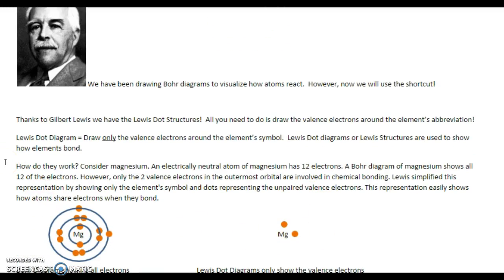How do they work? Consider magnesium. An electrically neutral atom of magnesium has 12 electrons. If we look on the periodic table, magnesium is number 12. That's the atomic number that tells us there are 12 protons. And because it's neutral to start out with, we also start with 12 electrons. A Bohr diagram of magnesium shows all 12, 2 in the first one, plus 8 in the next one, plus the two leftover ones in the outermost shell.